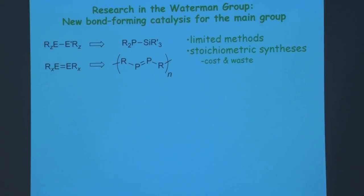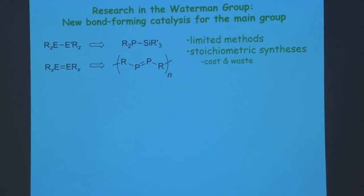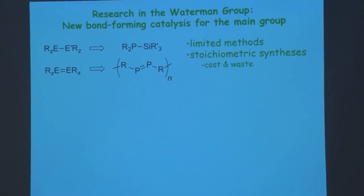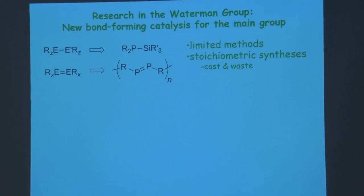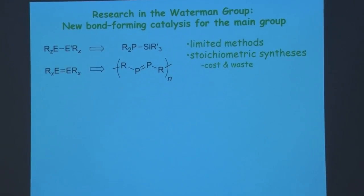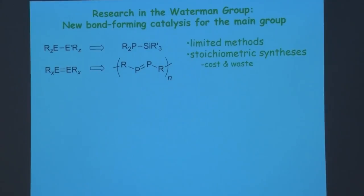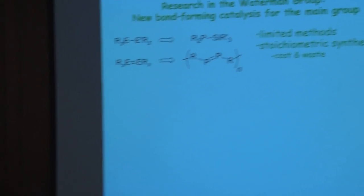There are a limited set of methods by which these molecules can be made. An honest main group chemist would tell you the synthetic tools available are largely SN2 and E1 — not a whole lot of tricks. Any way we can increase the number of tools in the toolbox is a big deal. Also, almost everything we make in the main group on any scale is made stoichiometrically, so there's a lot of waste — catalysis is our way to get out of that.